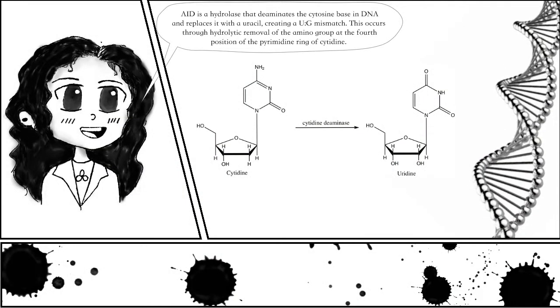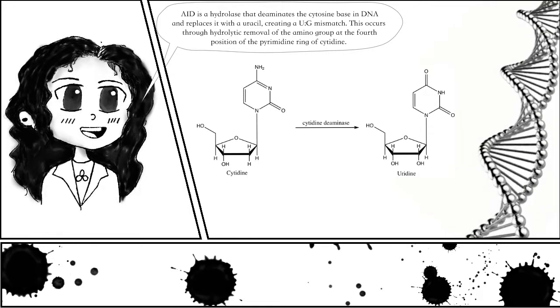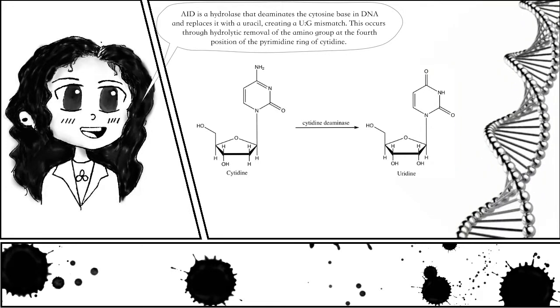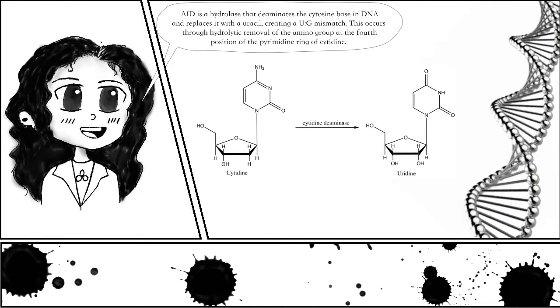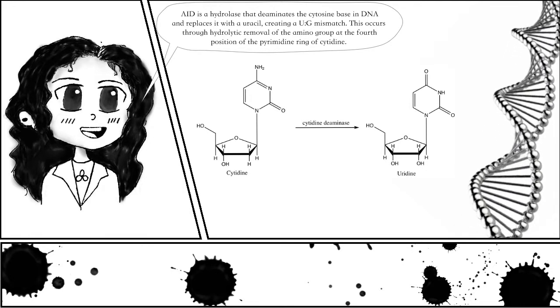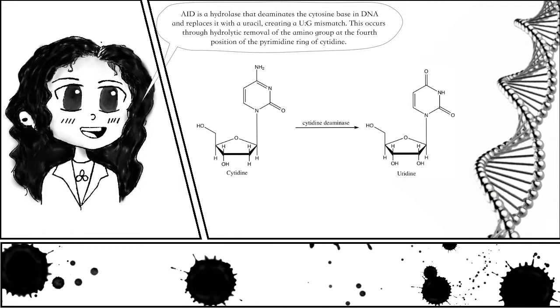It is a hydrolase that deaminates the cytosine base in DNA and replaces it with uracil, creating a UG mismatch. This occurs through hydrolytic removal of the amino group at the fourth position of the pyrimidine ring of cytidine.